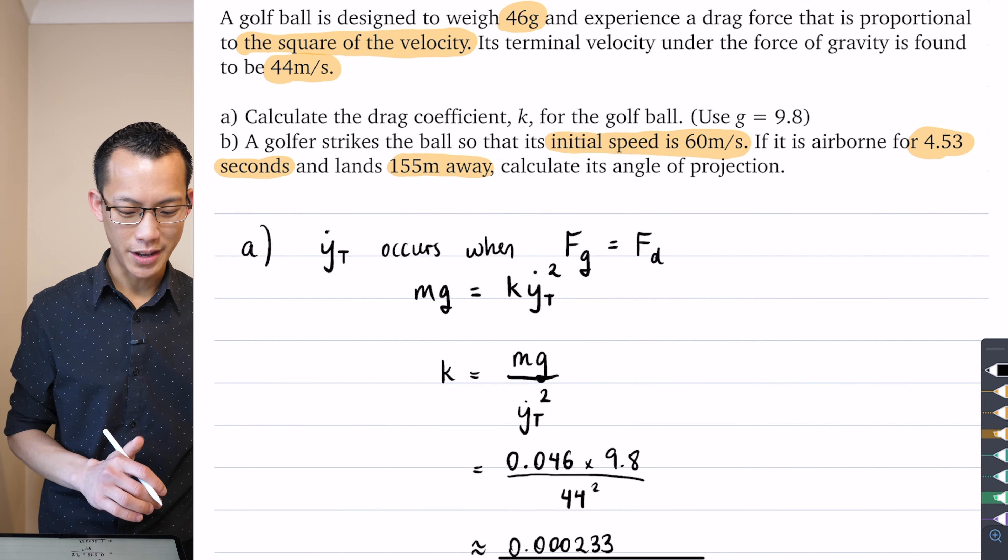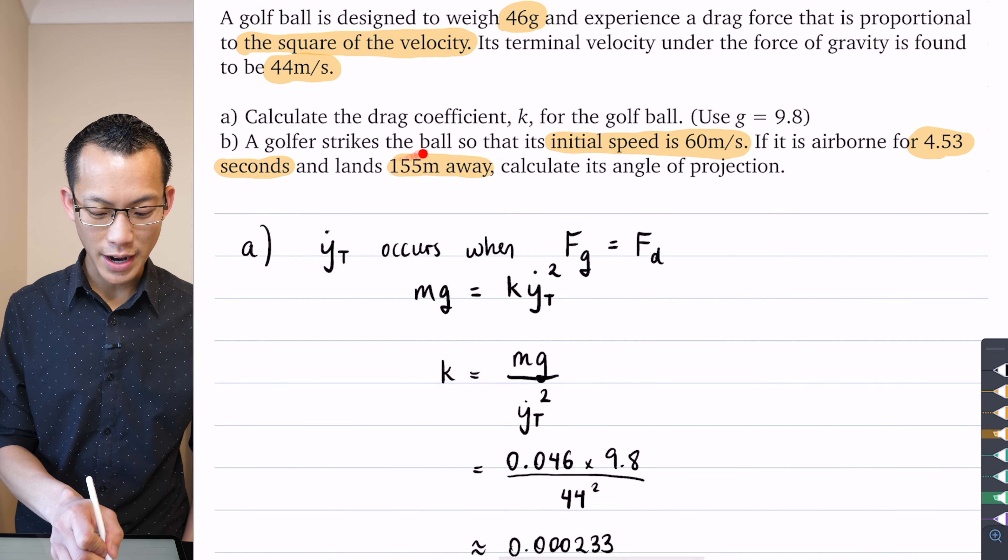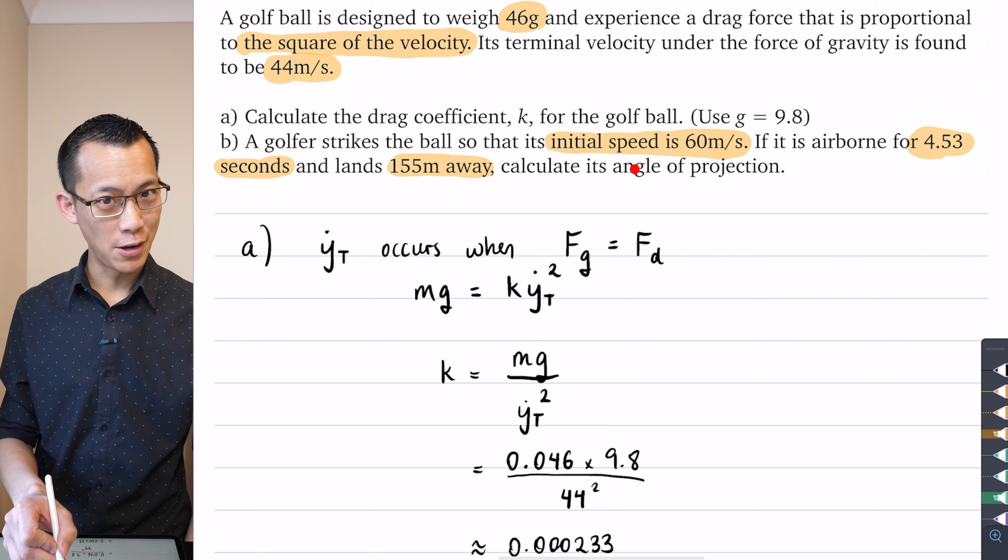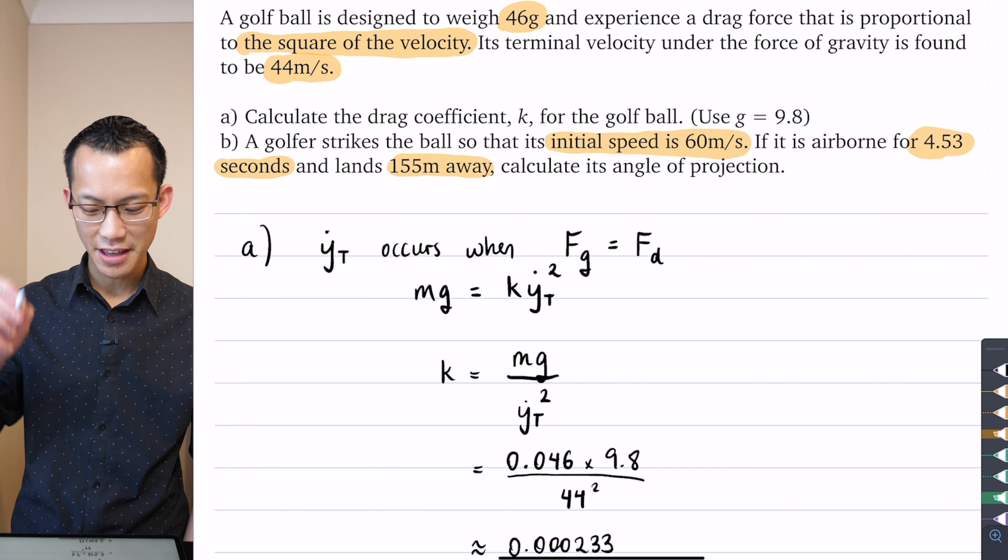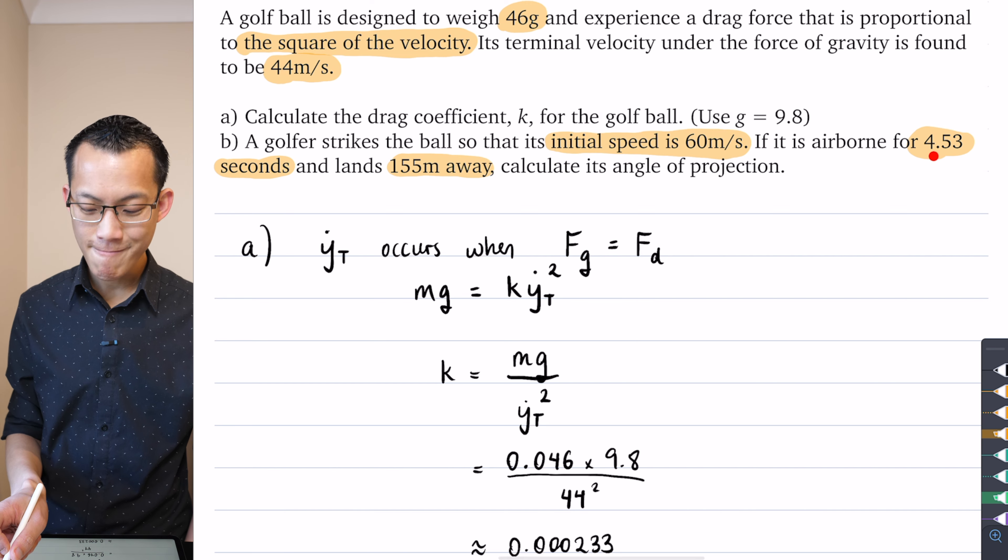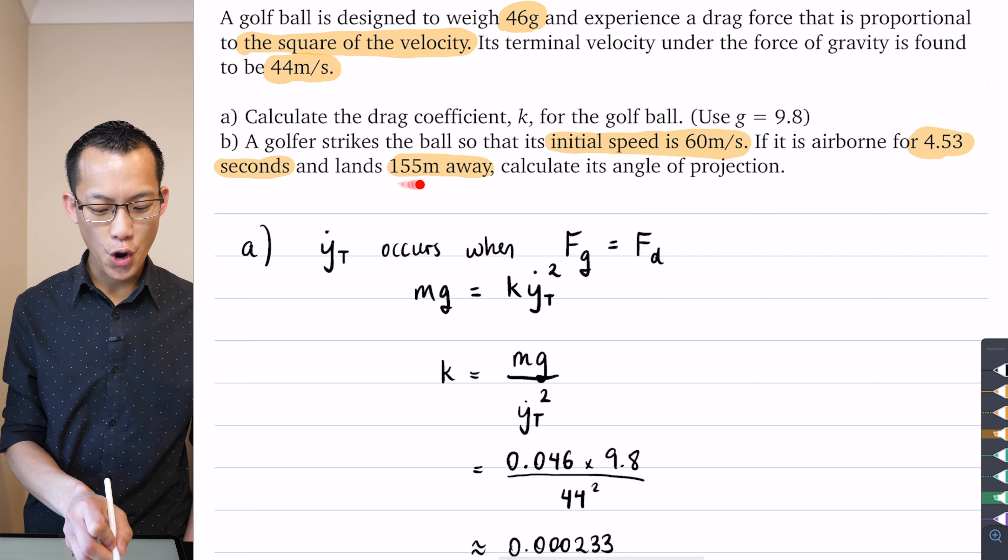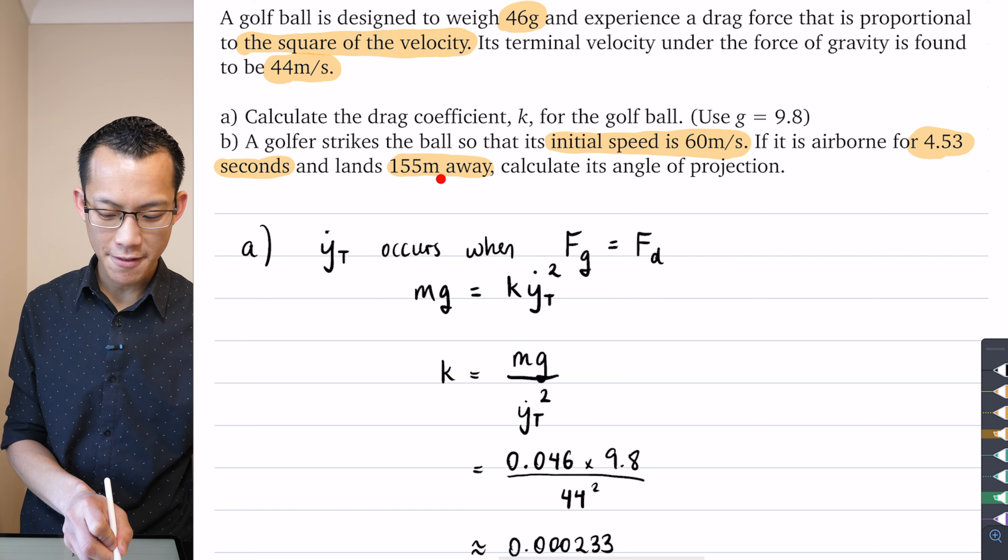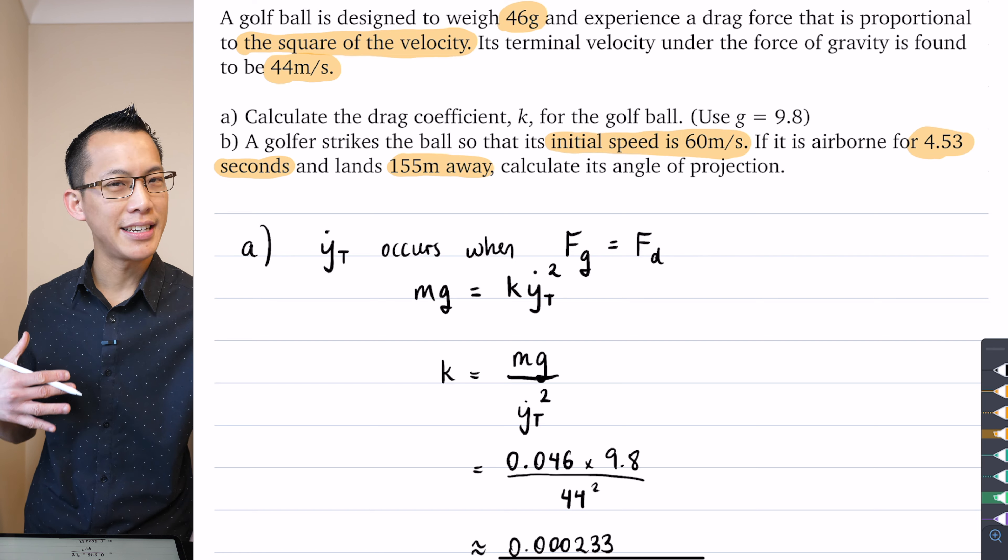Now we have all this other information to deal with. It says that a golfer strikes the ball - we've got this initial speed of 60 meters per second, so I'll file that away. I know the flight time, 4.53 seconds, and I know how far it ends up, 155 meters away.